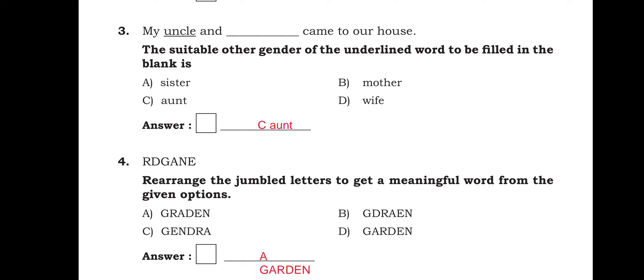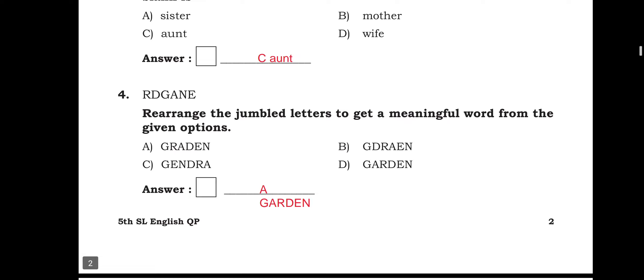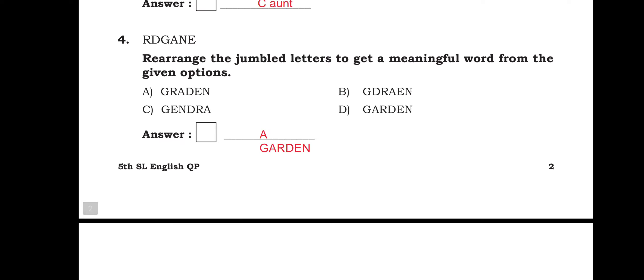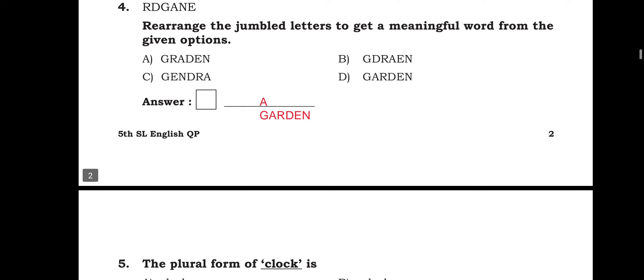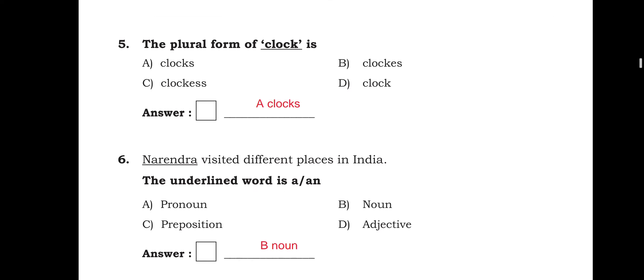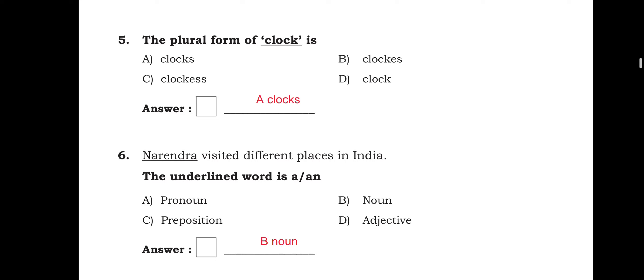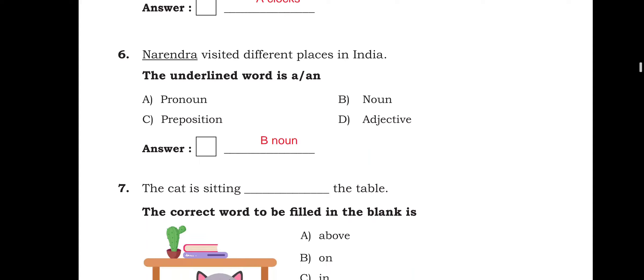R-D-G-A-N-E, rearrange the jumble letters to get a meaningful word from the given options. So option A is the right answer, garden. The plural form of clock is, so option A is the right answer, clocks, C-L-O-C-K-S.